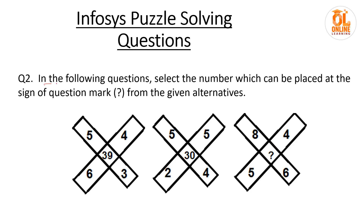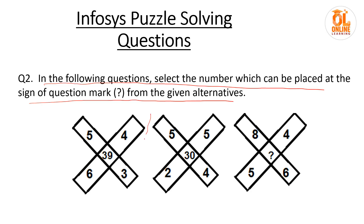In the following question, select the number which can be placed at the sign of the question mark from the given alternatives. So let us try to find the pattern. I can tell you a trick — always try to find the pattern from those figures first where you can see numbers that are divisible by 2, 5, or 10. In between you have the number 30, then it will be easy for you to analyze.